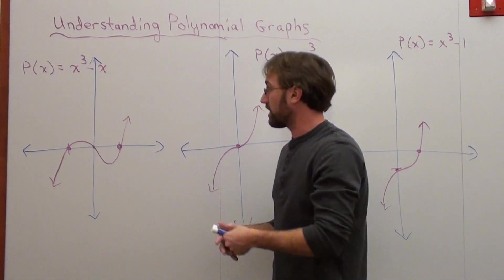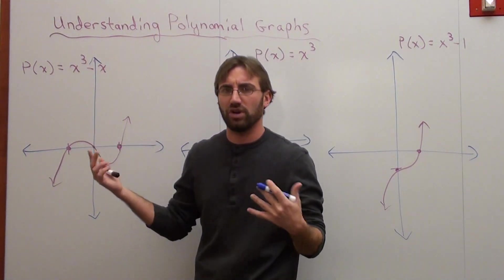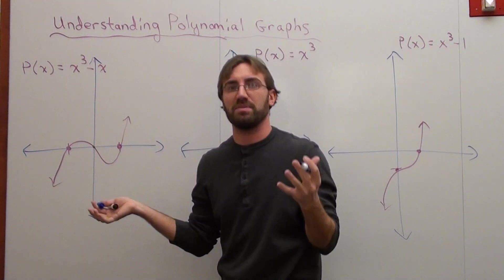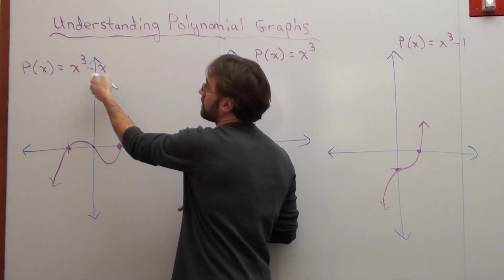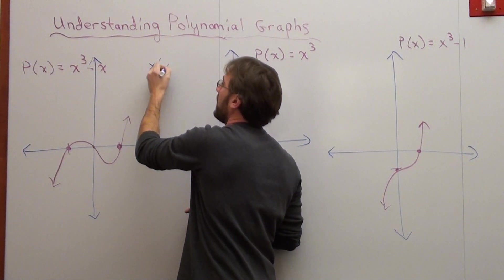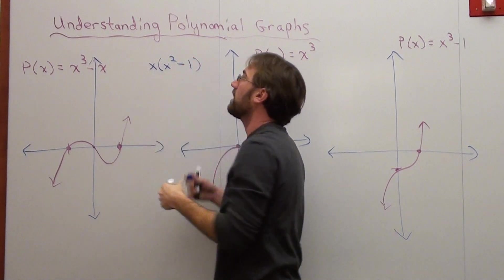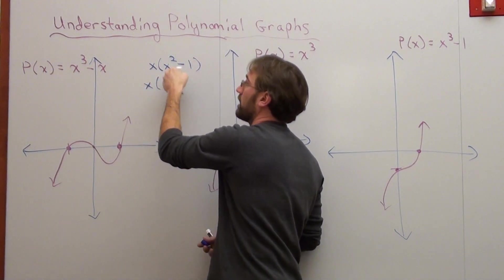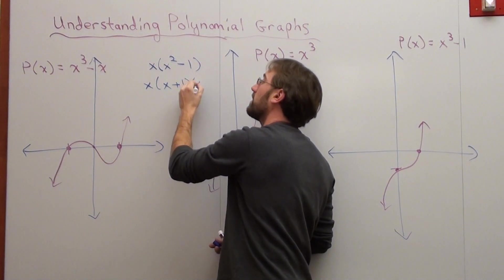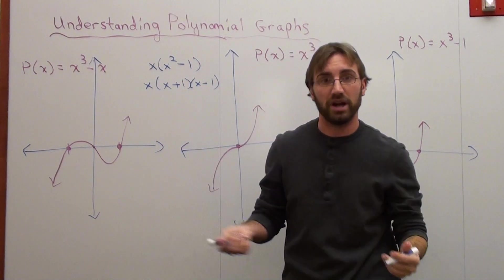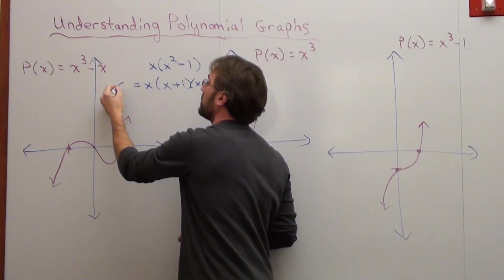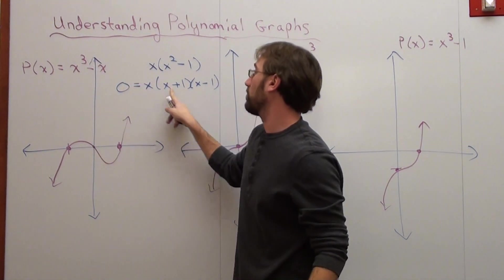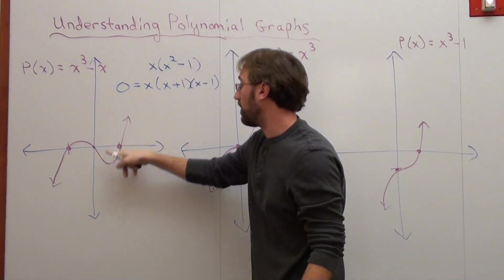So I'm going to go ahead and do the first one first. I've got x cubed minus x. I'm just going to prove right now that this is in fact the case. So what you would want to do if you were doing this type of problem is factor. So x cubed minus x factors into x, x squared minus one. If you remember how to do the difference of two perfect squares, it's x, x squared minus one is x plus one, x minus one. Set your P(x) equal to zero. That means x equals zero, x plus one equals zero, which means that x has to be negative one.